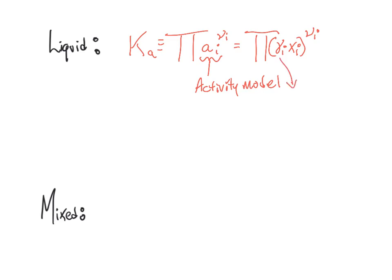And if we have ideal solution, what's gamma i? Gamma i equals one. And therefore, we just end up with the multiplication of all of the x's raised to all of the nus. So I've always kind of liked liquid reactions because in liquid reactions, you are most often, you know, you don't have this pressure term that you got to worry about. It's just the x's or the x's times the gammas raised to the nu. So that's really nice.